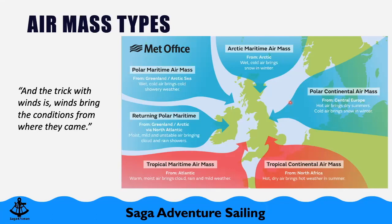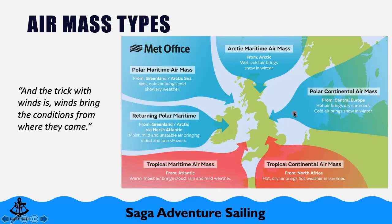Another air mass is the polar continental air mass, coming from land — from Russia. It's cold — it's the beast from the east — and it normally brings very cold weather in the winter. It can also bring some snow and rain because it goes over the North Sea and picks up some moisture from there.